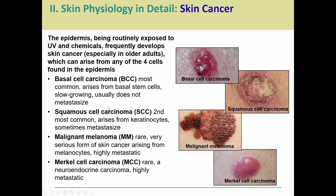The second most common is squamous cell carcinoma, coming from the keratinocytes. This can sometimes metastasize. It has a similar scabby appearance. Most of the time people with this will have an excision done — removing the tissue and stitching the person up.